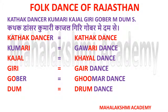Katak dancer stands for Katak dance, Kumari stands for Gavri dance, Kajal stands for Khayal dance, Giri stands for Ger dance, Gobar stands for Ghuma dance, and Dum stands for Drum dance, also known as Dol Nritya.